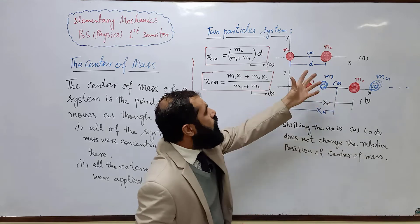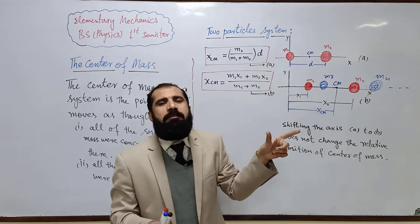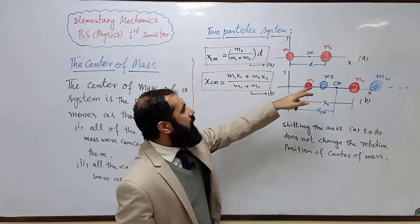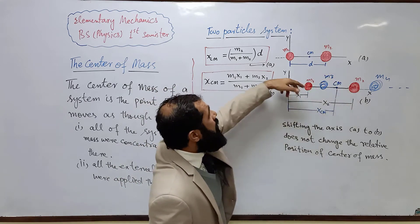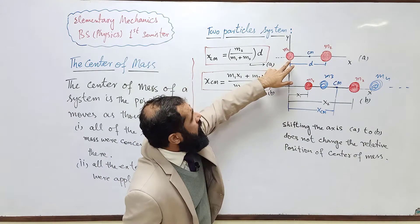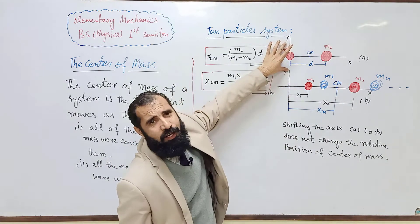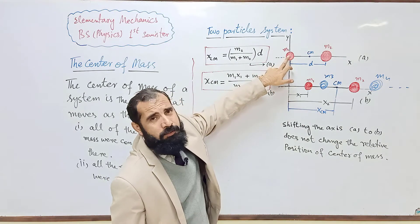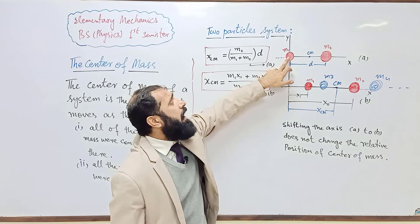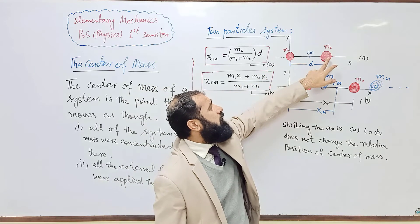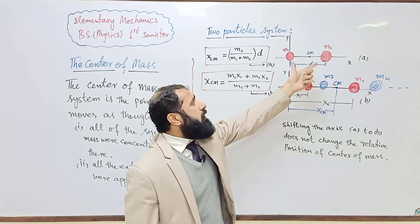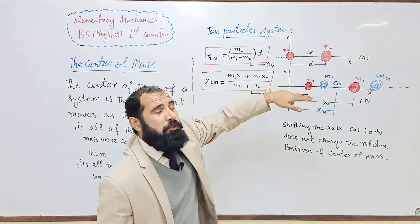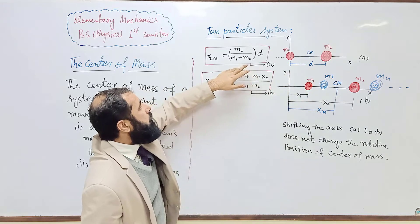Looking at this diagram, I have two masses: m1 and m2, separated by some distance d, placed along the x-axis. One of the two is assumed to be at the origin of the reference frame. I have chosen m1 to be at the zero position, and m2 is at some distance d. The position of the center of mass can be expressed as follows.